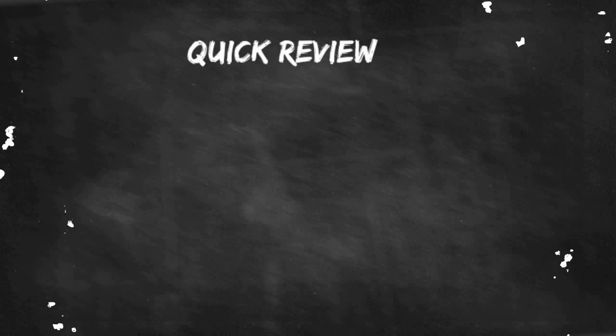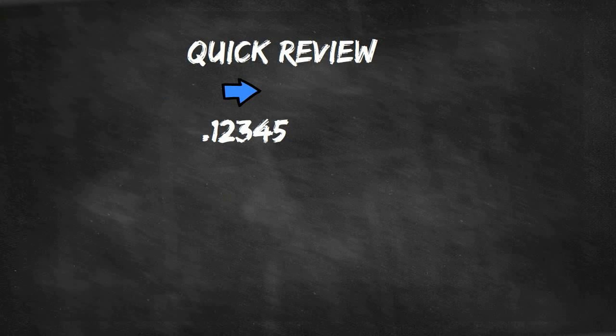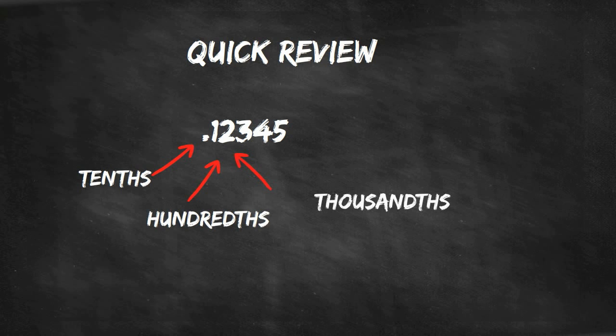A quick review of place value. You read a decimal from left to right. So starting at the left you have tenths, hundredths, thousandths, ten-thousandths, hundred-thousandths.